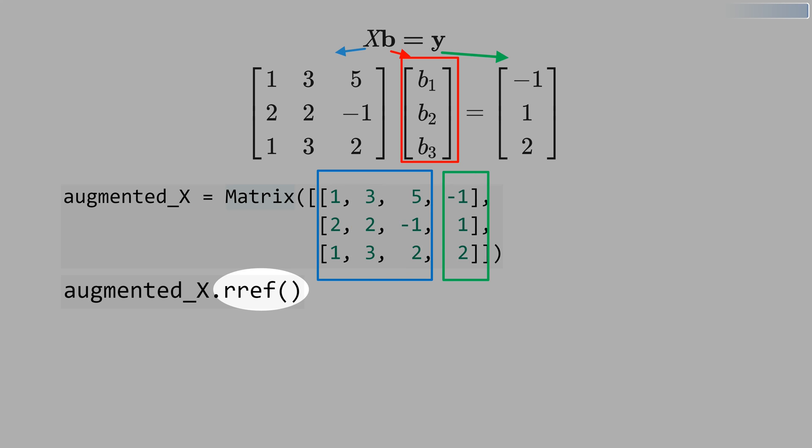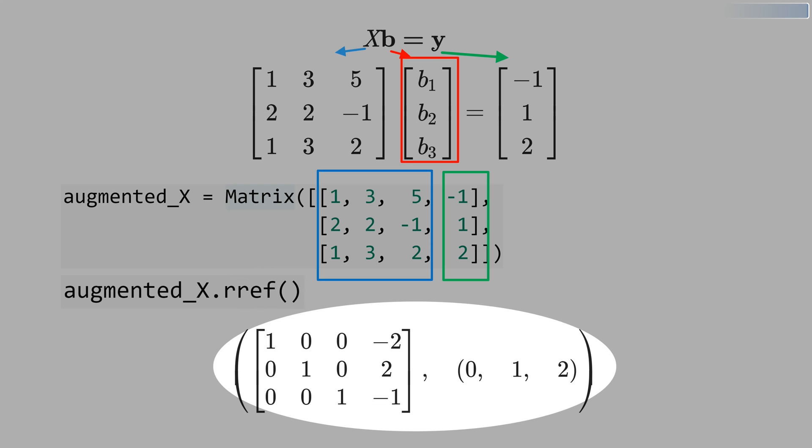Now, let's call the reduced row echelon form, and this is the result. These are the values of B that solve the equation.